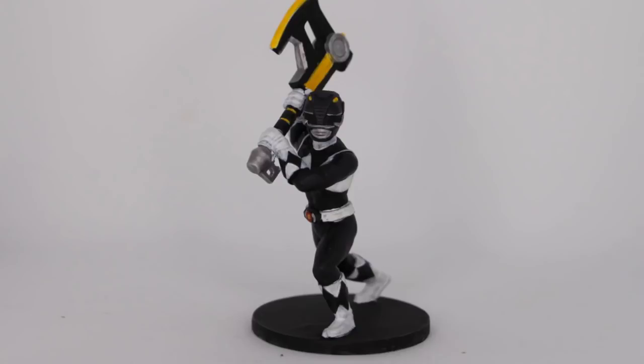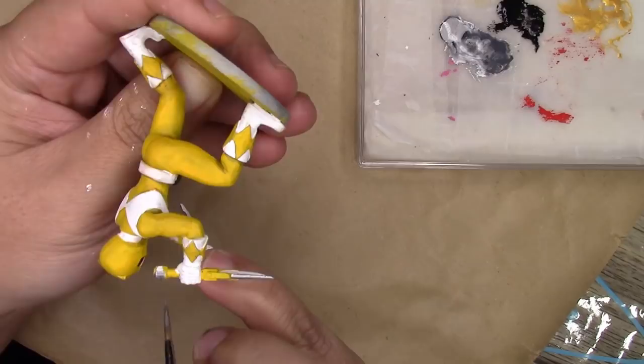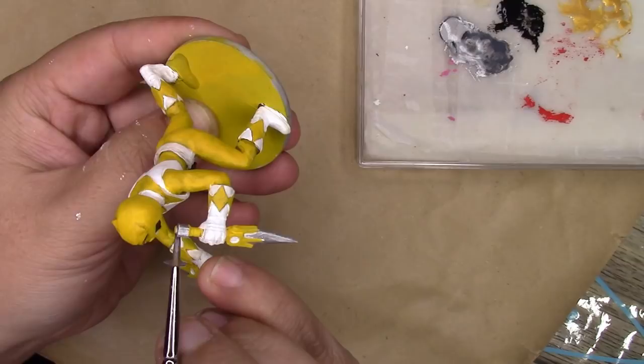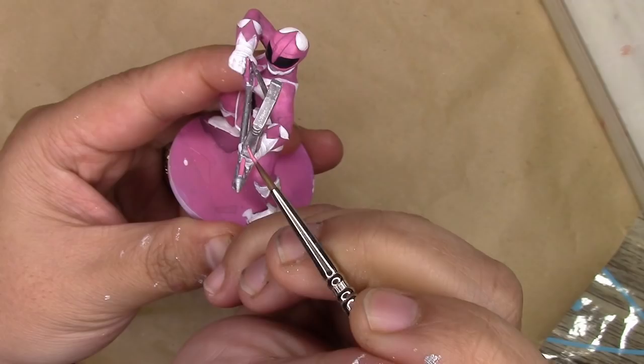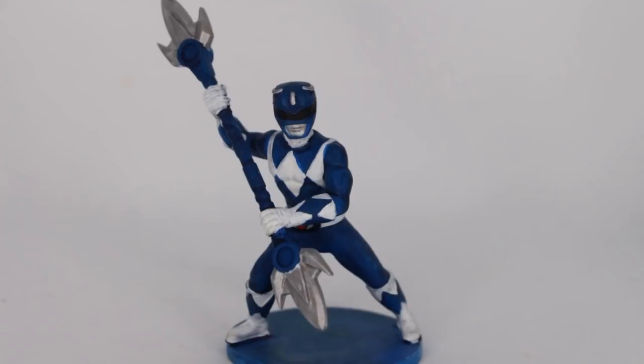For yellow, we'll paint up the blades and the handle bits of her weapons in silver, and we'll also touch the silver onto the saber-toothed tiger fangs and the nose on her helmet. Then we'll put black on her visor and in the eye socket details of her helmet. For blue, there's his weapon blades that'll be silver and the helmet details with the horns.